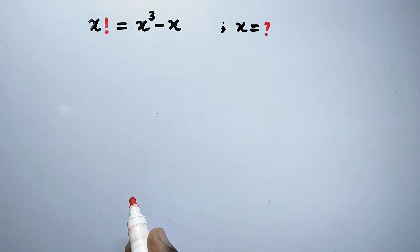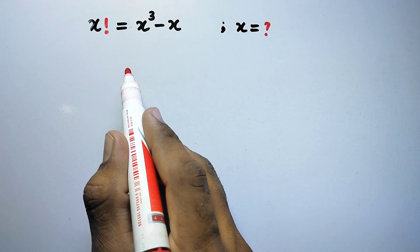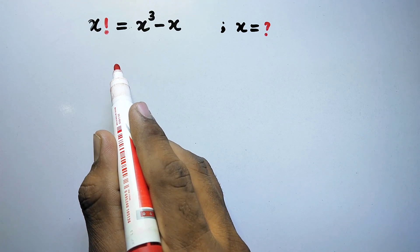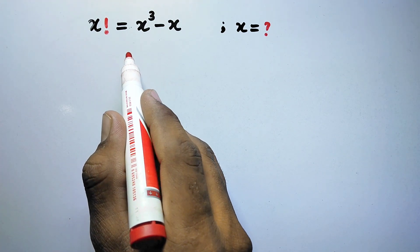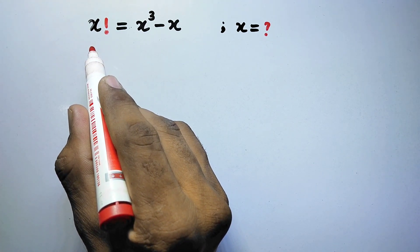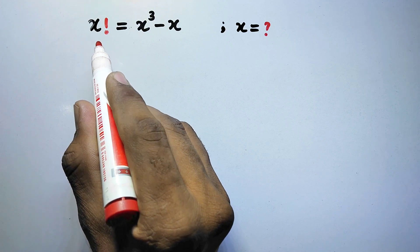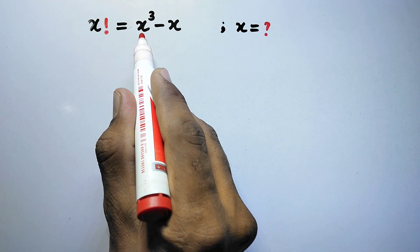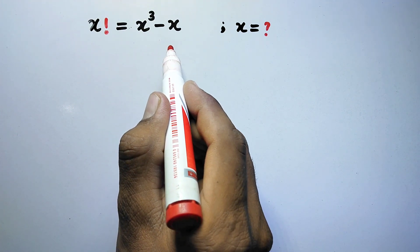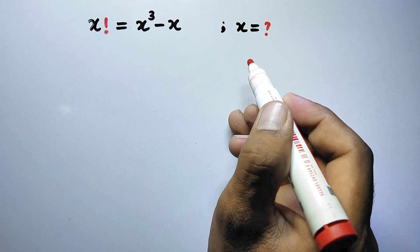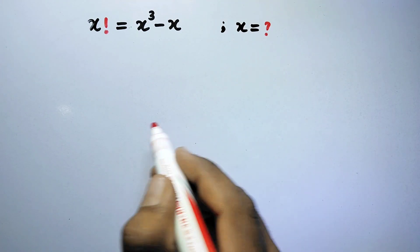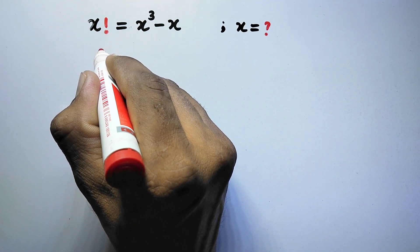Hello everyone and welcome to Explode Maths. In this video, we are going to solve a very nice olympiad math factorial problem: x factorial is equal to x cubed minus x, and we have to find the value of x. So let us see its solution.